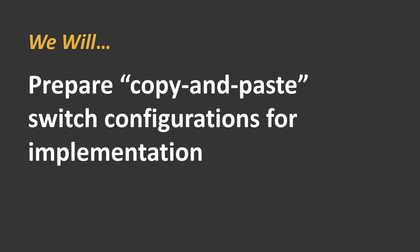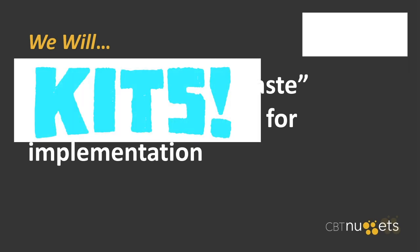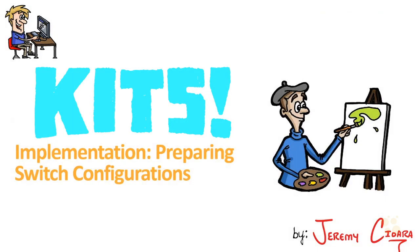That's what we're going to generate in the next nugget — creating our process flow or the work steps to make sure our late-night outage is as short as possible. For now, we have prepared the copy and paste switch configurations for implementation. I hope this has been informative for you, and I'd like to thank you for your view.